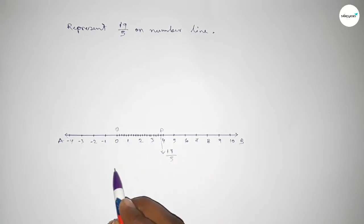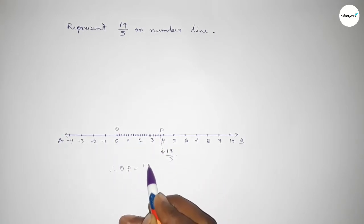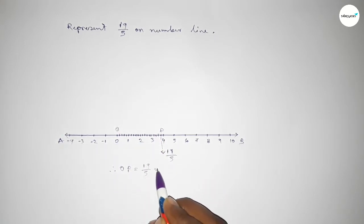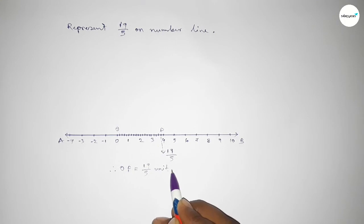Taking O and P here, therefore OP equals nineteen over five units. That's all. Thanks for watching — if this video is helpful to you, then please like and share.